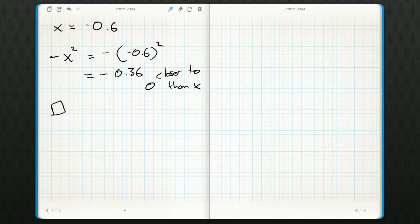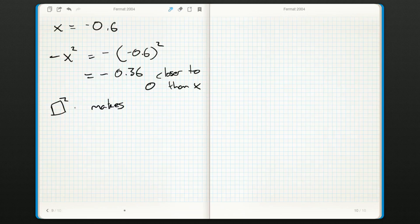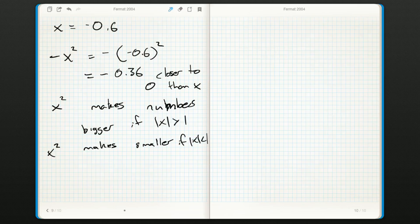Squaring makes numbers bigger if the thing you put in has absolute value bigger than one. It's more than one unit away from zero. But x squared makes things smaller if the thing you put in is closer than one unit to zero.